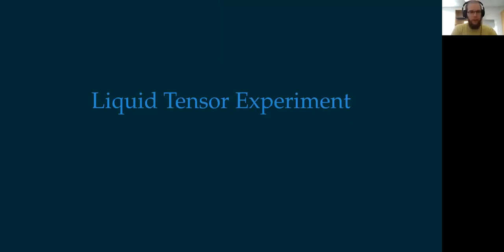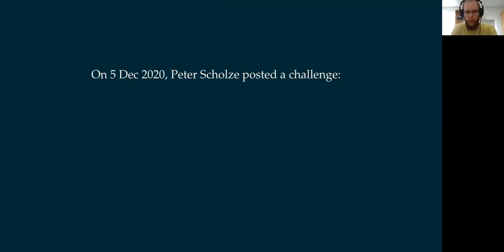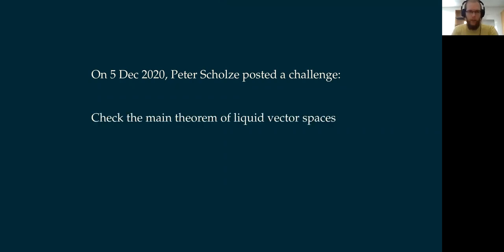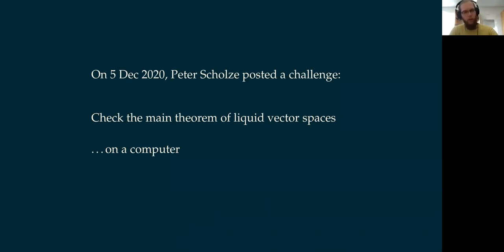Thanks for the invitation and the opportunity to speak here. On the 5th of December last year, Peter Scholze posted a challenge on Kevin Buzzard's blog, the blog of the Xena project. In that challenge, he said: check the main theorem of liquid vector spaces on a computer. This theorem is a result that he proved together with Dustin Clausen in 2019, and he had several reasons for posing this challenge that we'll get to later.